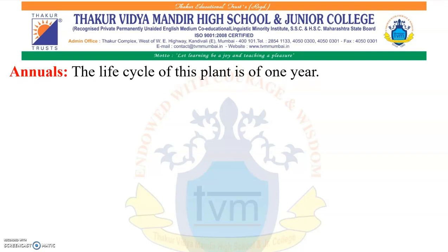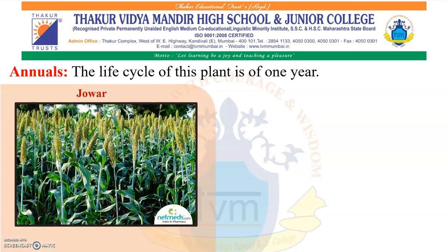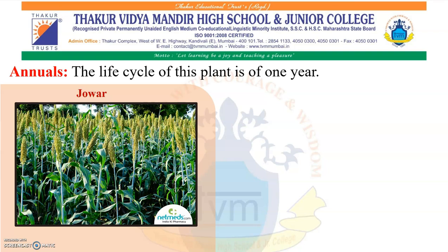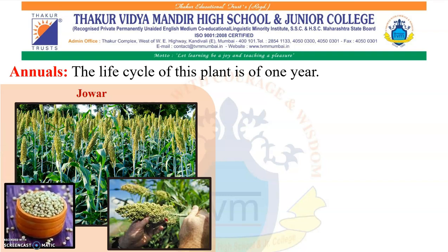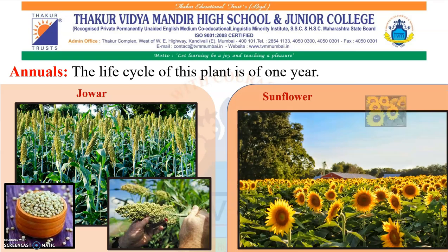Annual plants: the life cycle of this plant is of 1 year — the plant completes its growth in 1 year. Examples include jawar and sunflower. Sunflower has various uses: it is used as food, in making oil, for decoration, and in making paper. It also has great potential as a biodiesel to offset the use of petrol and diesel, and farmers serve sunflower as food to their livestock.